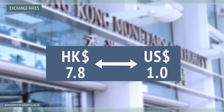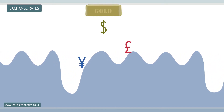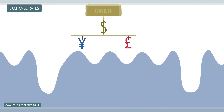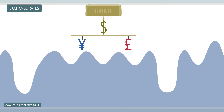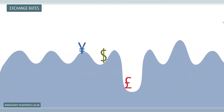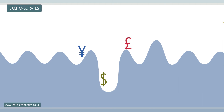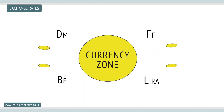Under the post-war IMF system, currencies had a fixed value against the US dollar, which itself was pegged to gold. But this collapsed in 1971, leaving national currencies to float freely, or be pegged, or even abandoned as countries formed single-currency zones such as the Eurozone.